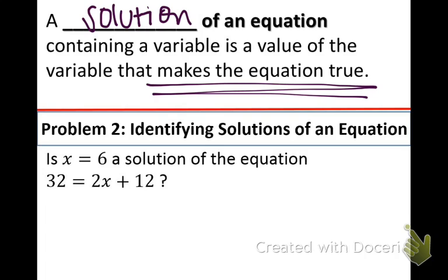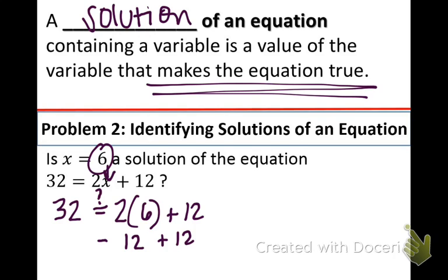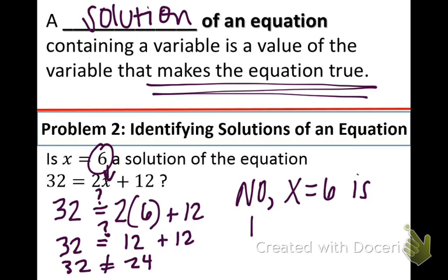So in example two, we have x equals 6. Is that a solution of the equation 32 equals 2x plus 12? How do we figure that out? Well, we take the 6 and we plug it in for the x right there. So we have 32 equals question mark. 2 times 6 plus 12. What's 2 times 6? That's 12. 12 plus 12 equals 32, maybe. What's 12 plus 12? 24. Does 24 equal 32? No, not at all. So we're going to write no. x equals 6 is not a solution. And we are done with that.